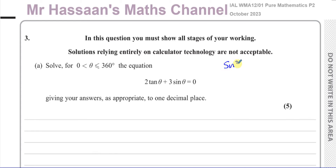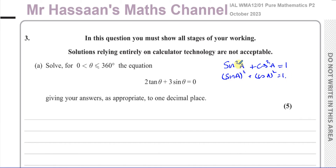The first identity is: sine squared of an angle plus cosine squared of the same angle equals one. This means sin(a) all squared plus cos(a) all squared equals one — they have to be squared. You cannot have sin(a) plus cos(a) equals one; that's not true. Only sin²(a) plus cos²(a) equals one, and they must be the same angle.